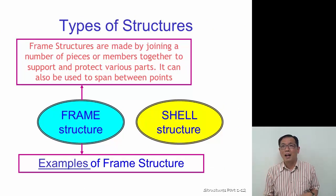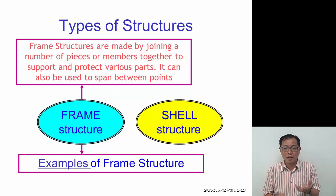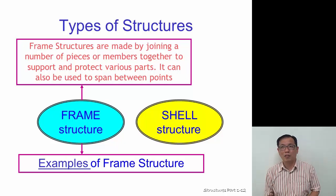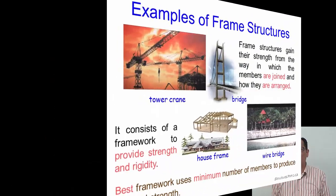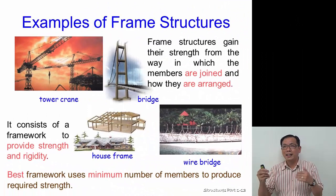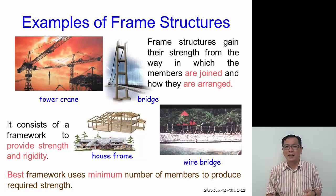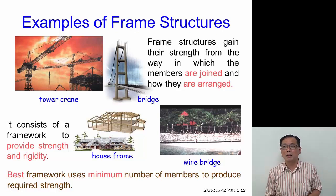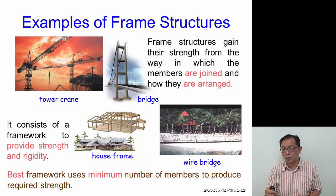Types of structures: we have two types. First is a frame structure, which is made up of different pieces and members joined together to protect and support the whole thing. Examples of frame structures are bridges, homes, and wire bridges. They gather strength from where different parts are joined together, forming a framework that provides rigidity and strength using a minimum number of support members.